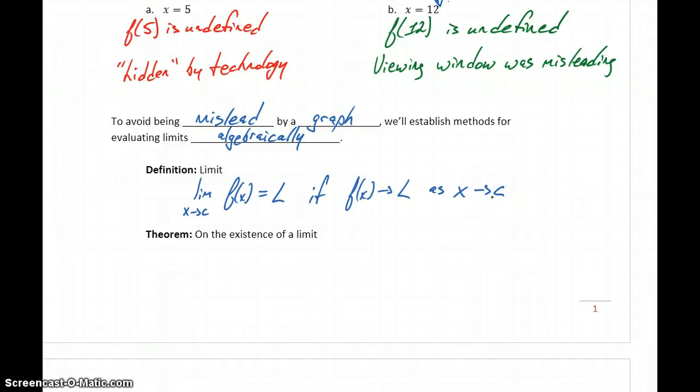And then we have this theorem that relates our one-sided limits with our limit expression. So we can say that the limit of our function exists and is equal to this value L if and only if